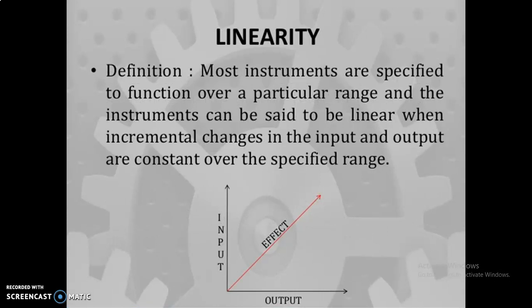Linearity is when the output and input are both proportional to each other. Most instruments are specified to function over a particular range and are called linear. If they are not varying proportionally, they come under non-linear. Looking at the graph, the red line shows a proportional change — this is what we call linear.